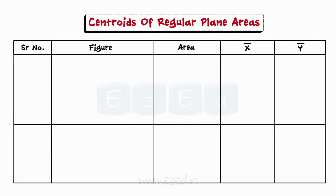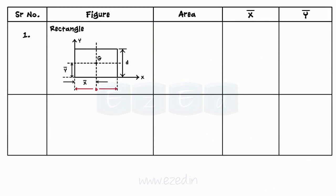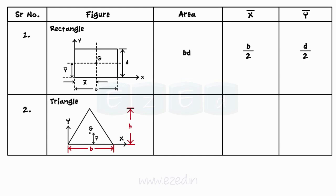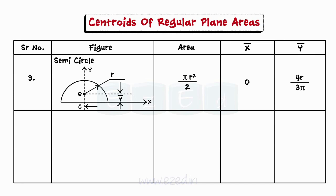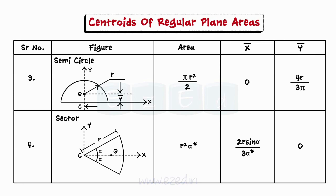The table given shows the centroids of regular plane areas. Consider a rectangle of base b and depth d. Its area would be b × d. The x-coordinate of its centroid would be b/2 and the y-coordinate would be d/2. Now consider a triangle of base b and height h. Its area would be ½ × b × h. Its centroid would have its x-coordinate as b/2 and y-coordinate as h/3. Similarly, the table gives us the area, x and y-coordinates of the centroid of basic plane areas like semicircle and sector having an included angle of 2α. The angle is to be considered in radians. The coordinates x-bar, y-bar of the centroid G are with respect to the axis shown in the respective figures.